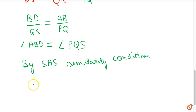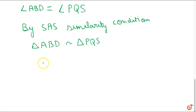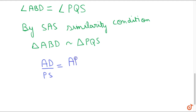We can say that triangle ABD is similar to triangle PQS. Now since these two triangles are similar, we can say that the corresponding ratios will be equal, so we can say that AD by PS is equal to AB by PQ. As we can see, this is what we wanted to prove.